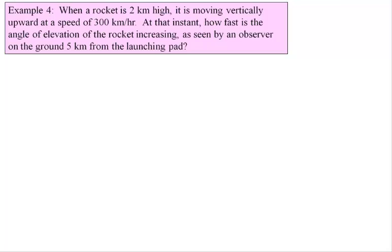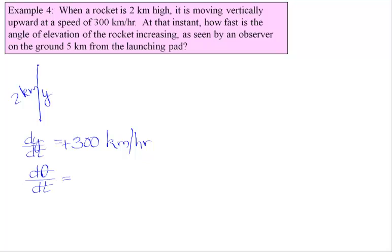One final example. When a rocket is two kilometers high, here's my rocket up here. I'm going to call that two kilometers. It is moving vertically upward at a speed of, I like to call vertical things y. At that instant, how fast is the angle of elevation increasing as seen by an observer on the ground, here's my observer, five kilometers from the launching pad.